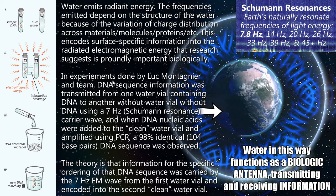There are experiments done by Luc Montagnier and team — he was a Nobel laureate who discovered the HIV virus, passing away in November 2019. Effectively what they did is they put some sample DNA in vial A with water, and then they had pure water in vial B — completely pure, untouched. Then they exposed vial A to electromagnetic energy at seven hertz, which is the first mode of the Schumann resonances.